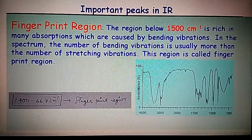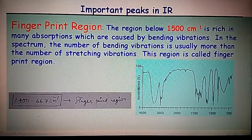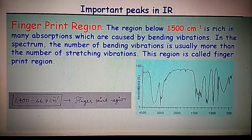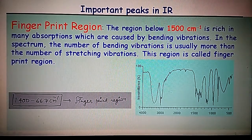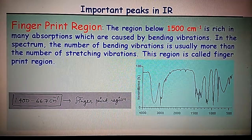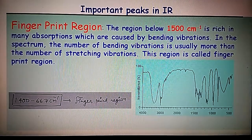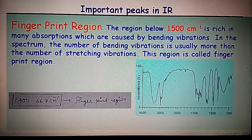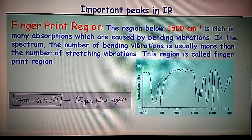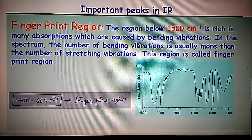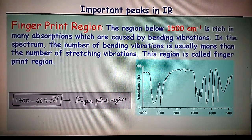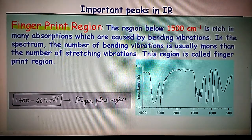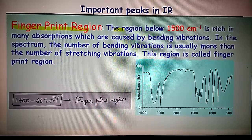When IR radiation interacts with a molecule or compound, vibrations are generated. Vibration means a change in bond length or a change in bond angle, and it occurs due to a change in dipole moment. A change in bond length corresponds to stretching vibration, while a change in bond angle corresponds to bending vibration.